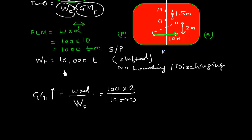W is the same because there is no loading or discharging. Let's work out, this cancels, so it gives me 0.02 meter.